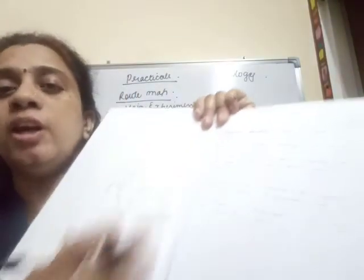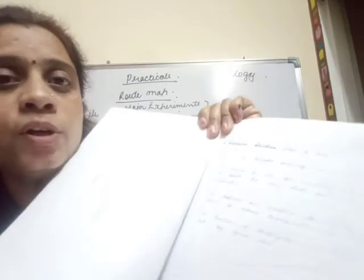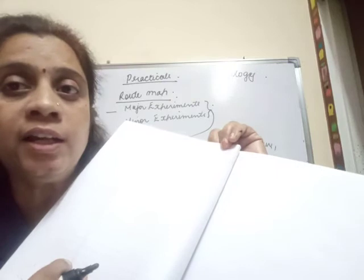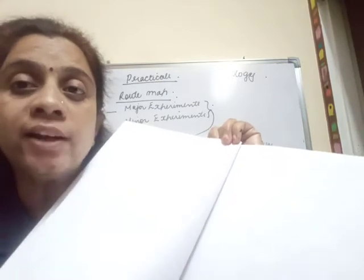Suppose you have to make one spotter. After that spotter, you leave the next page empty or blank, and on the following page you make the diagram. That means your diagram should always come on the left-hand side and your comment section should always come on the right-hand side.